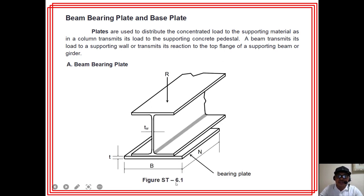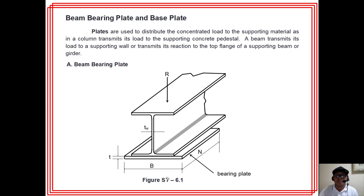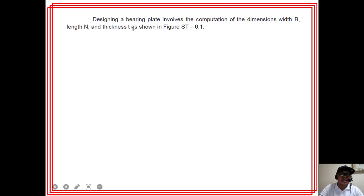Consider a beam carrying a load R — either a direct load or a reaction from the support. The beam rests on a concrete support, and between the concrete support and the steel beam we need a bearing plate. This plate distributes force R so that the concrete pedestal is prevented from crushing, and the beam parts are prevented from yielding.